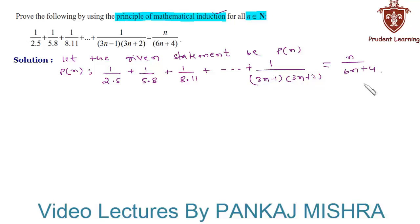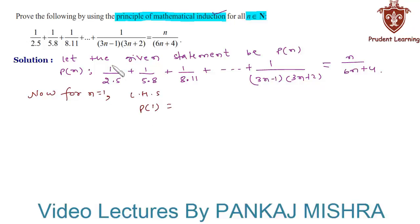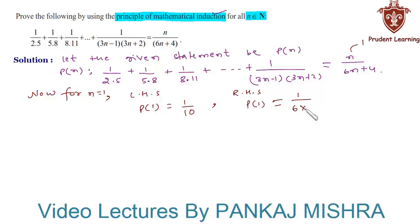In our first step we will verify whether the given equation holds true for n=1. For n=1, on the left hand side P(1) = 1/(2×5) = 1/10, and on the right hand side P(1) = 1/(6×1+4) = 1/10. Since both sides give the same value, P(1) is true.